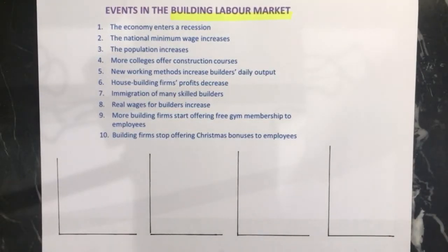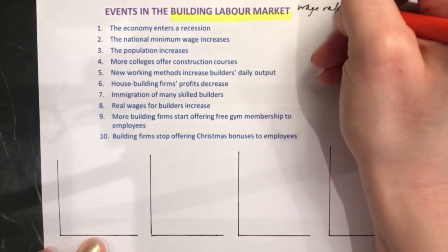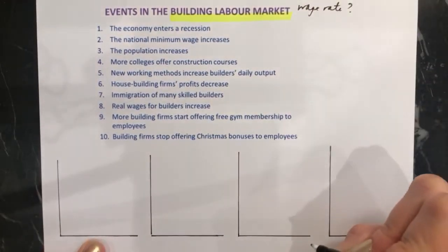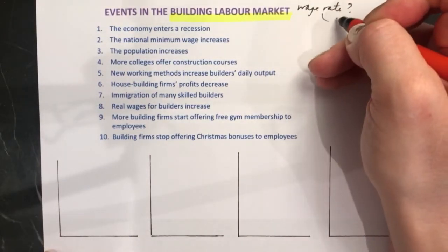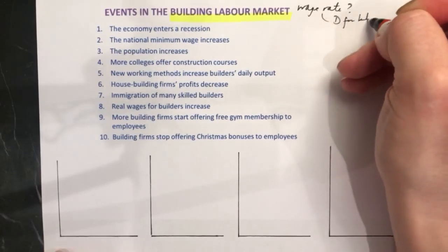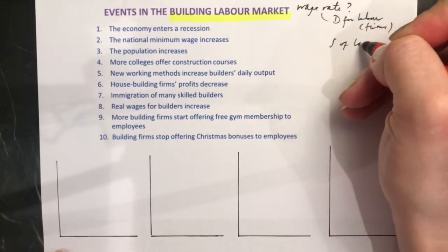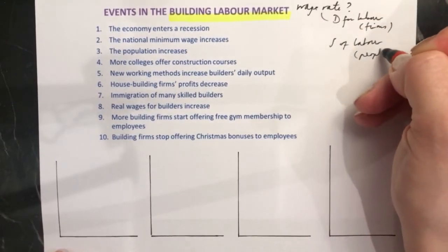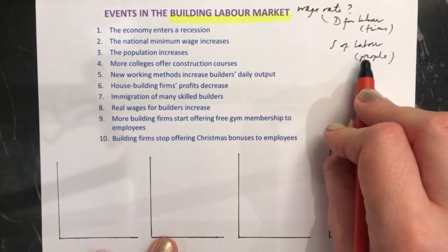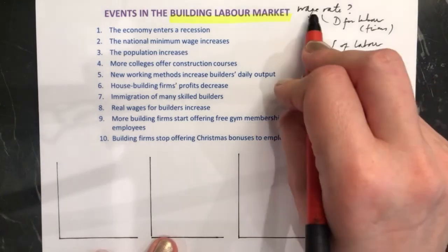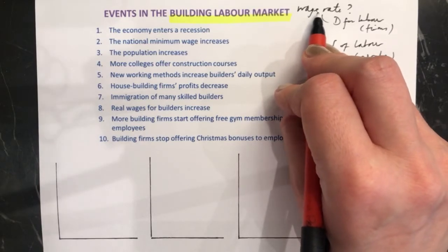Here we're going to look at different events happening in the labour market and how this affects the wage rate — so what happens to how much people are paid. Remember that the wage rate in the labour market is just determined by the demand for labour by firms and the supply of labour by people. You're looking at the interaction of demand and supply, and that's where you find the wage rate, which is essentially the price you're paying for the labour — but you pay a wage rather than a price for the people.